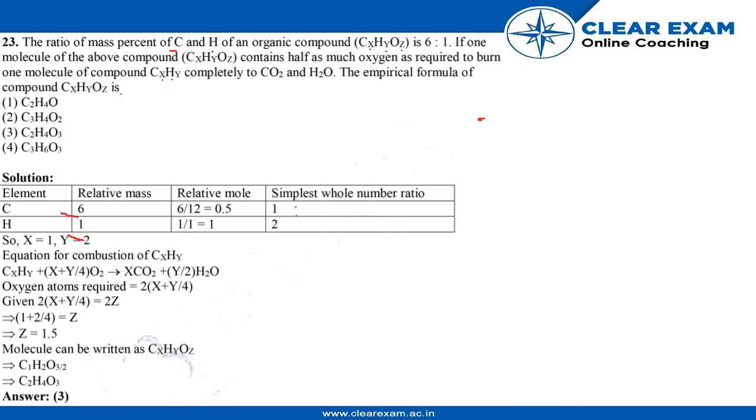The equation for combustion of CₓHᵧ is: CₓHᵧ + (X + Y/4)O₂ → XCO₂ + (Y/2)H₂O. Given that oxygen required is 2(X + Y/4), so we will have 2Z.